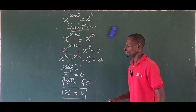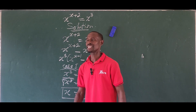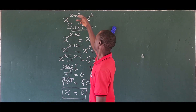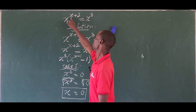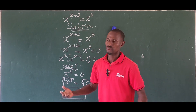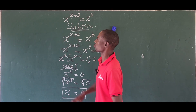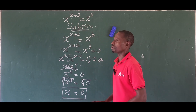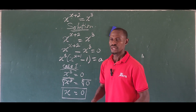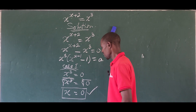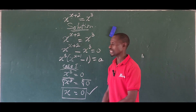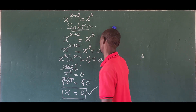We check if x equals 0 satisfies the original equation. Substituting: 0 to the power of 0 plus 2 gives 0 to the power of 2, which is 0. On the right side, 0 to the power of 3 is also 0. So x equals 0 satisfies the original equation.